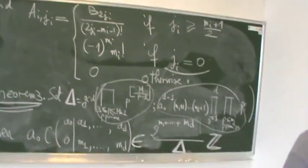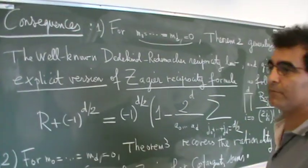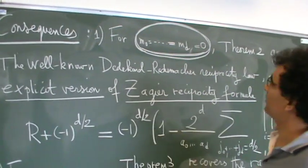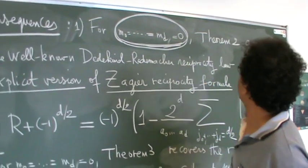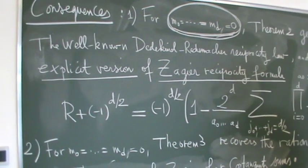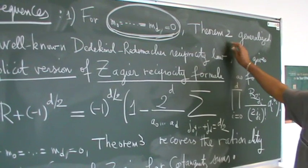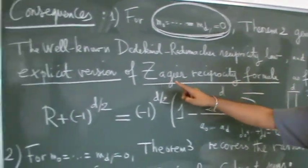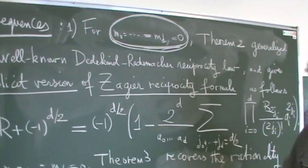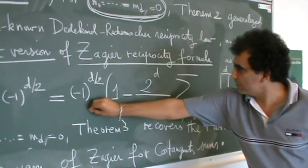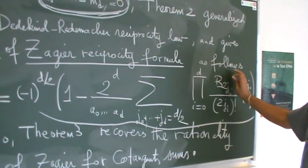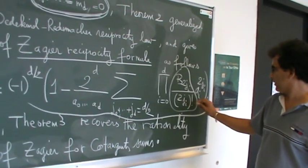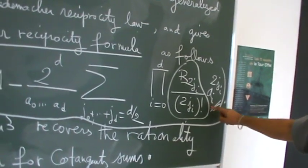Now we give some consequences coming directly from our results. For instance, if we take the case where all non-negative entries are 0, then our theorems give explicit results which precisely generalize the well-known Dedekind-Rademacher reciprocity law and give an explicit version of Zagier's reciprocity formula, given exactly by this polynomial. The coefficients in this case are very simple: only the Bernoulli number over 2g_i factorial, with parameters A0 to AD.